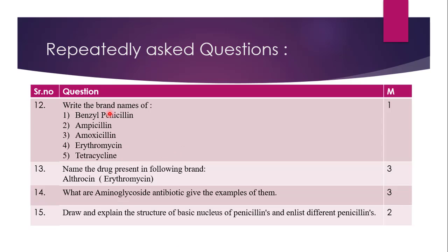The next question is: Write the brand names of all these antibiotics — Benzylpenicillin (Penicillin G), Ampicillin, Amoxicillin, Erythromycin, Tetracycline. All these drug brand names you are supposed to write down, and each antibiotic brand carries one mark. The next question is: Name the drug present in the following brand. The brand name Althrosine is given, and the drug is Erythromycin. Erythromycin exists under the brand Althrosine. Many brand names will be given and attempt any two or three will be asked. This question comes in Section 2 to 6 for three marks, with various brands from different chapters.